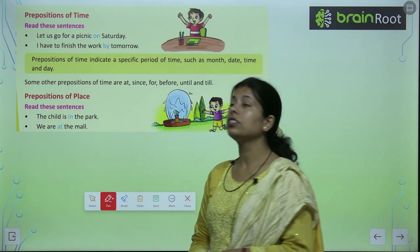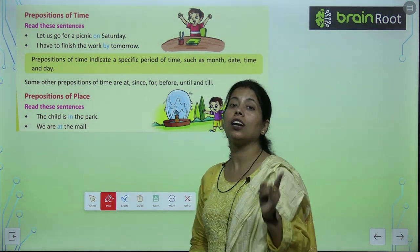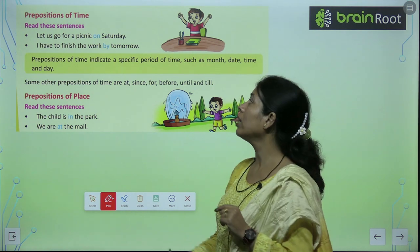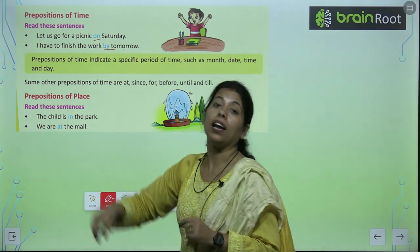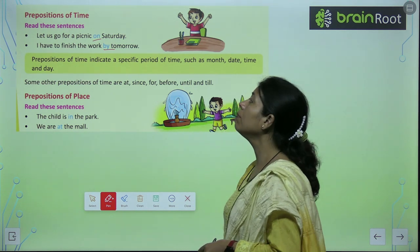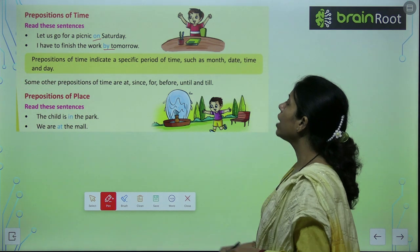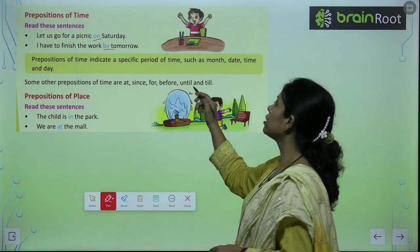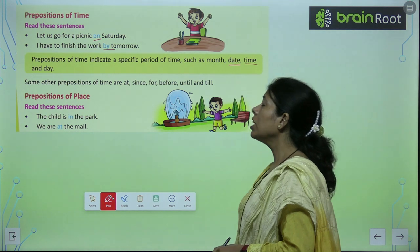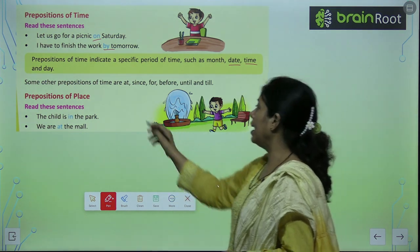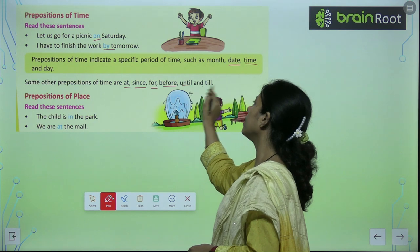'I have to finish the work by tomorrow.' Mujhe ye work finish karni hai — kab tak? Kal tak. Yahan pe kya dikh raha hai? Time. Toh time ke liye hum kya lagate hain? On, by, at. Prepositions of time indicate a specific period of time such as day and time. Some other prepositions of time are: at, since, for, before, until, and till.